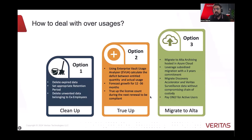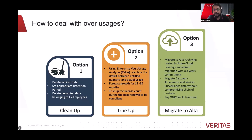If customers have decided to move to cloud, we would recommend they consider migrating to Alta. Alta Archiving is a SaaS version of Enterprise Vault. Veritas will help customers migrate workloads like Enterprise Vault, Discovery Accelerator, Compliance Accelerator, and Surveillance to Alta Archiving, which is hosted in Azure and fully managed by Veritas. Another advantage of moving to Alta is that we charge only for active users, whereas in on-prem Enterprise Vault, we charge for active as well as legacy users.